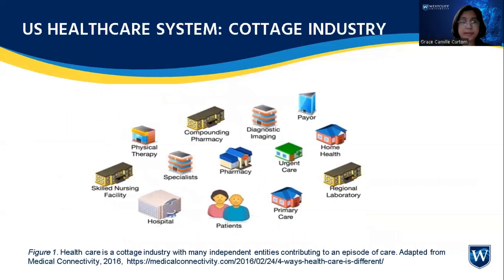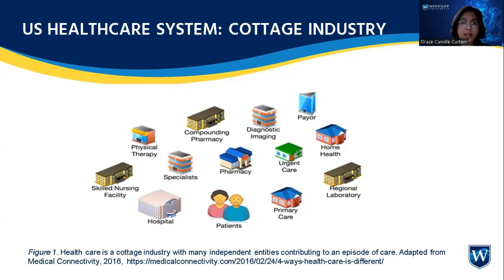Before we begin, let us first understand how the US healthcare system works. They say that the US healthcare system is a cottage industry. Because of the HIPAA law, data sharing between healthcare entities is hardly done, and so an episode of care at one clinic may not be transmitted to another clinic. Thus, the accuracy of diagnostics is not good because that prior episode of care can be a contributing factor to arriving at a better healthcare diagnosis.